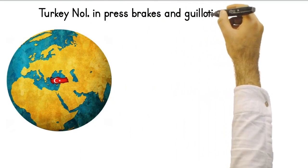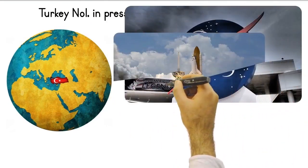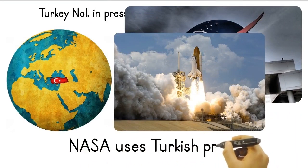Turkey ranks first in the world in terms of Arpkant press and guillotine shears. Currently, the American NASA organization is producing the fuel tanks of the rockets it will build using Turkish presses.